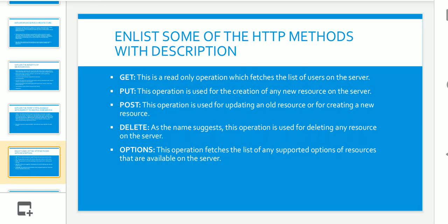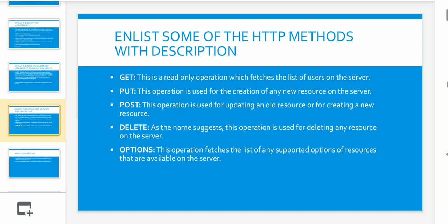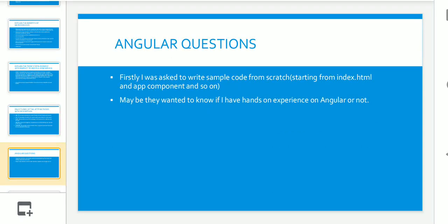The next question was: list some HTTP methods with descriptions. The methods are GET, PUT, POST, DELETE, and OPTIONS. The interviewer expected me to explain in which scenarios each method is used. He also asked about HTTP response codes — what 200, 500, 403, 404, and 401 refer to. Please brush up on those as well. With that, we are done with the Spring and Spring Boot interview questions.